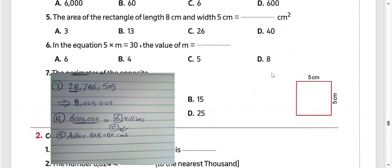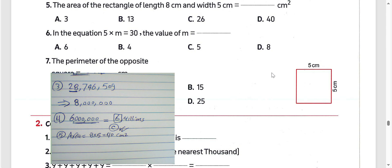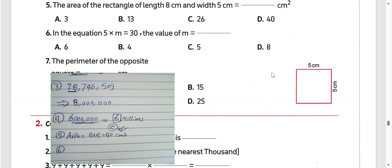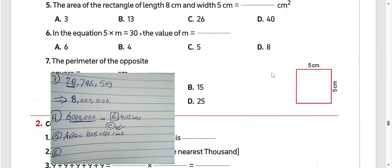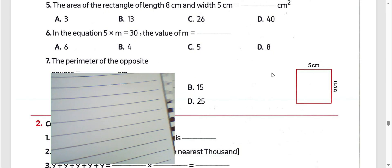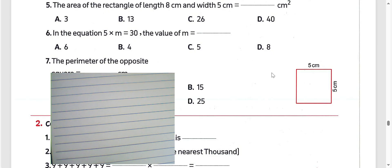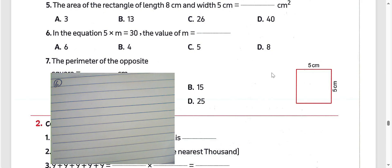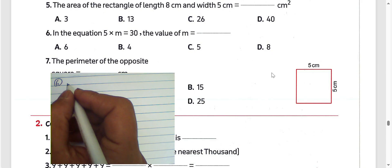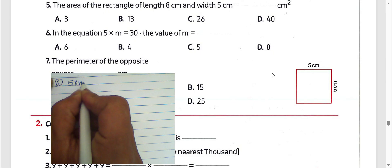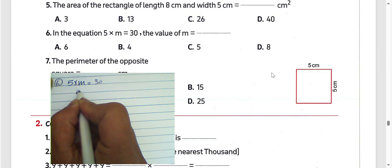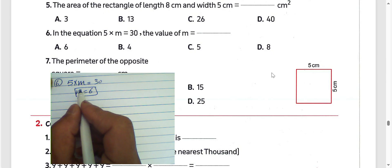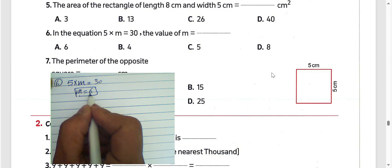Next, question number 6: in the equation 5 times 5 divided by m equals 30, we find the value of m. 5 divided by 6 equals 30 means the value here would be 6. Because 6 times 5 equals 30. Then m equals 6.